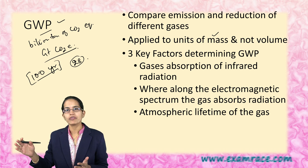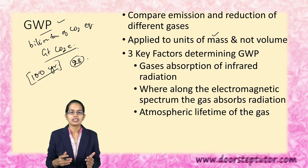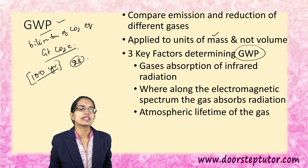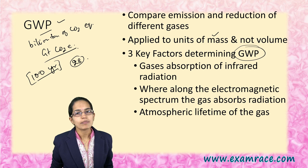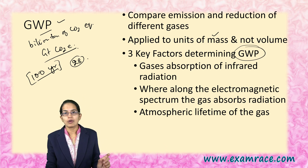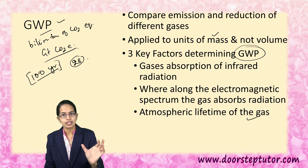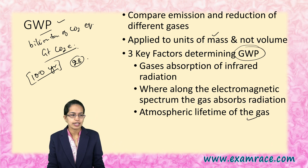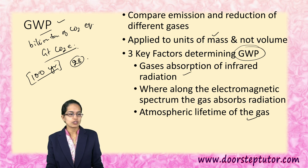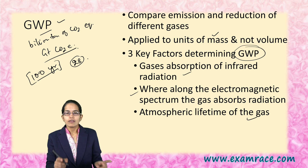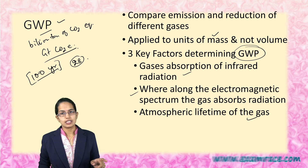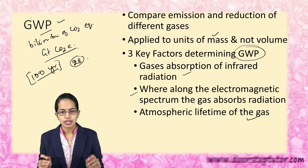In the next table, we would have the list of the potentials across various gases. The next important point is the factors that help you understand or determine the global warming potential. The first is the lifetime of the gas — how long the gas would remain in the atmosphere, that is the atmospheric lifetime. The next is the absorption of infrared radiations by the gases, and where in the electromagnetic spectrum the gas absorbs the radiation. That is very important.